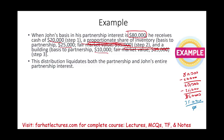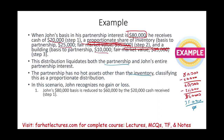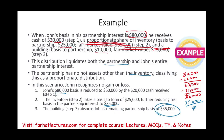The distribution liquidates both the partnership and John's interests. We have no hot asset other than the inventory, and it's a proportionate distribution, so we recognize no gain and no loss. So: $80,000 minus $20,000 gives a remaining balance of $60,000; then $60,000 minus $25,000 gives $35,000; and in step three, the building absorbs John's remaining partnership basis of $35,000. We need to remove the basis — the basis needs to go down to zero.